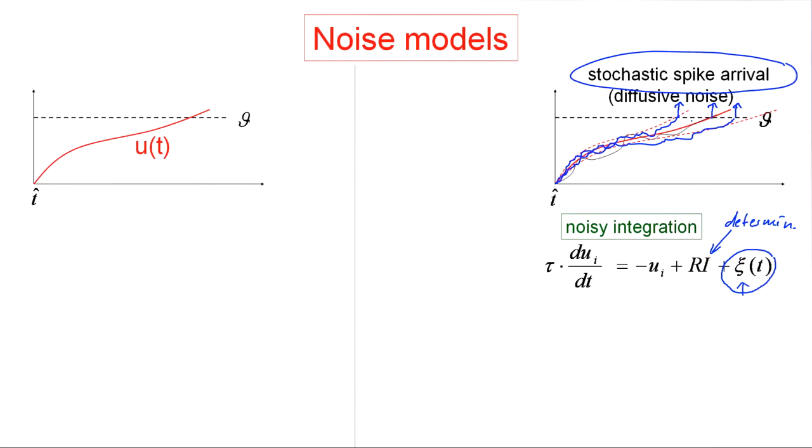Now we can take a completely different point of view. Let's focus on our deterministic trajectory—the trajectory I would get using just the deterministic part of the input, the part controlled by the experimentalist, that's repeatable between trials.